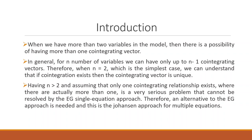Therefore, when n is equal to two — which is the simplest case — we can understand that the co-integration vector is only one: two children, one co-integration, one band. If there are more than two, assuming that there is only one co-integrating relationship, it is a very serious problem that cannot be resolved by the Engle-Granger single equation approach. Therefore, an alternative — the Johansen approach for multiple equations — is needed.